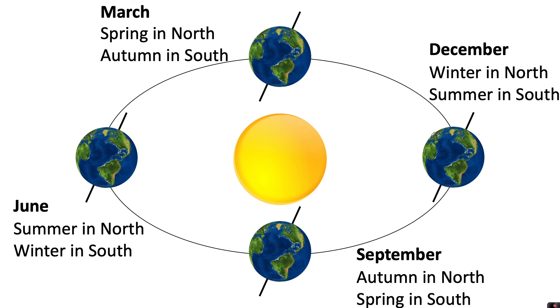There is an invisible line around the centre of the earth called the equator, and as the earth orbits the Sun, the Sun strikes the equator at approximately the same angle wherever it is in its orbit. So for this reason the equator doesn't experience seasons.